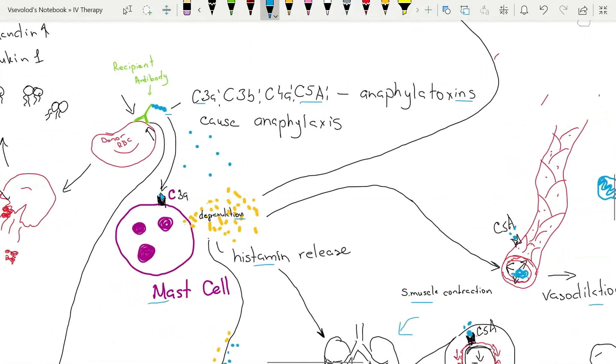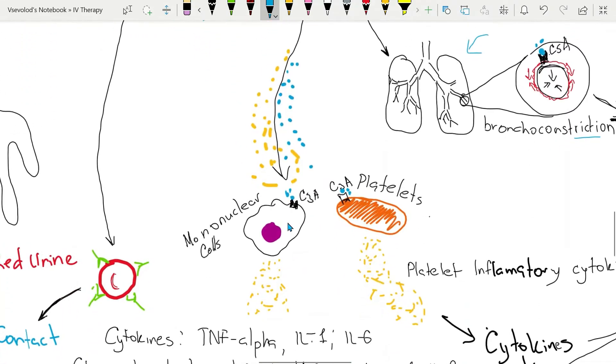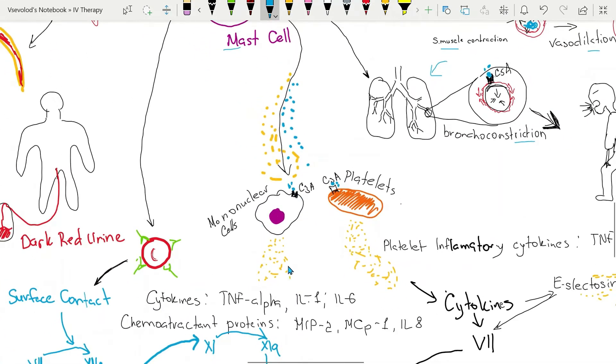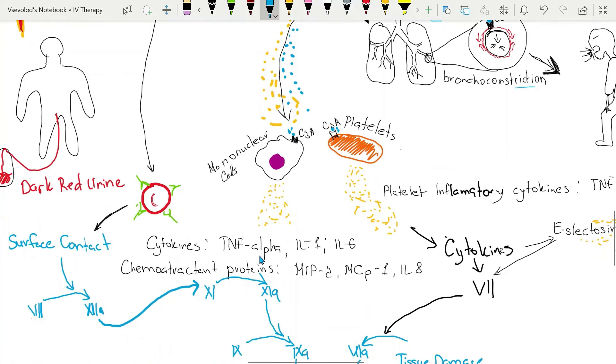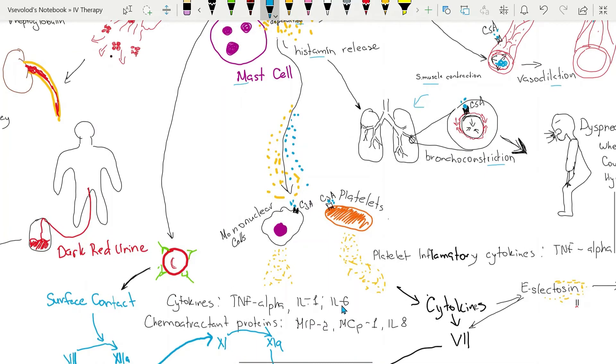Histamine and complements activate mononuclear cells. They in turn release inflammatory cytokines such as tumor necrosis factor alpha, interleukin 1, and interleukin 6. Also, mononuclear cells will release chemoattractant proteins such as MIP2, MCP1, and interleukin 8.